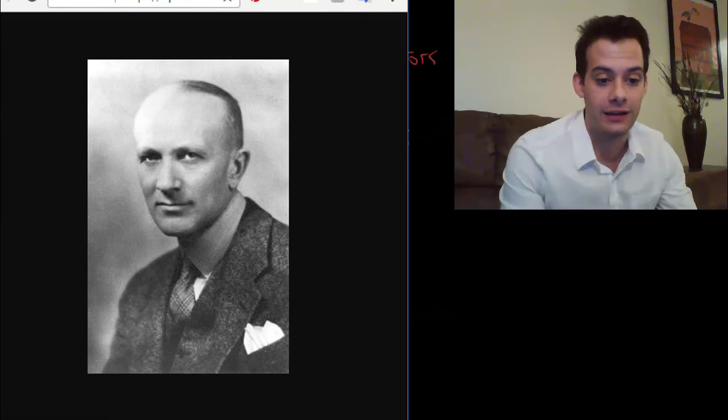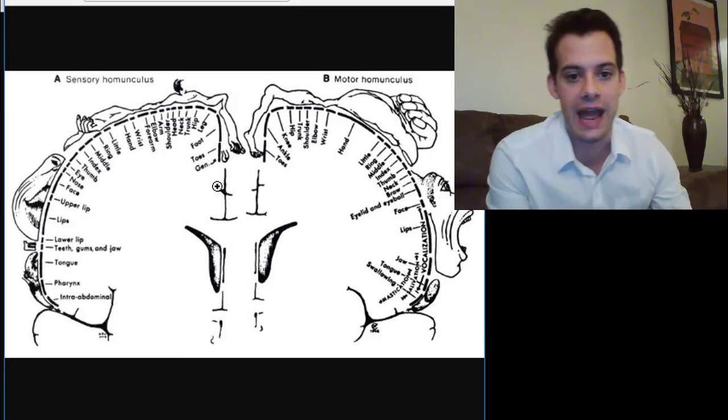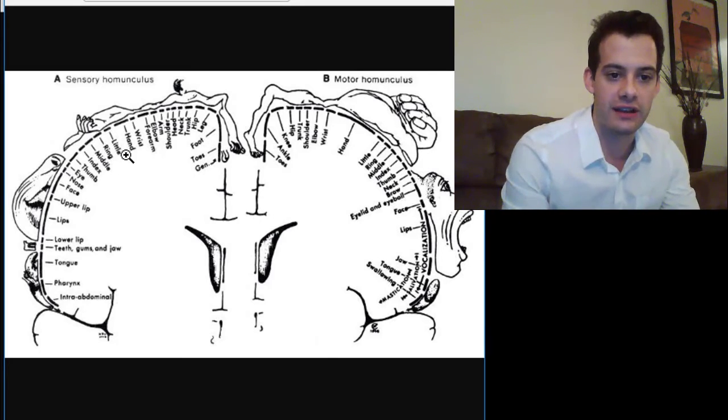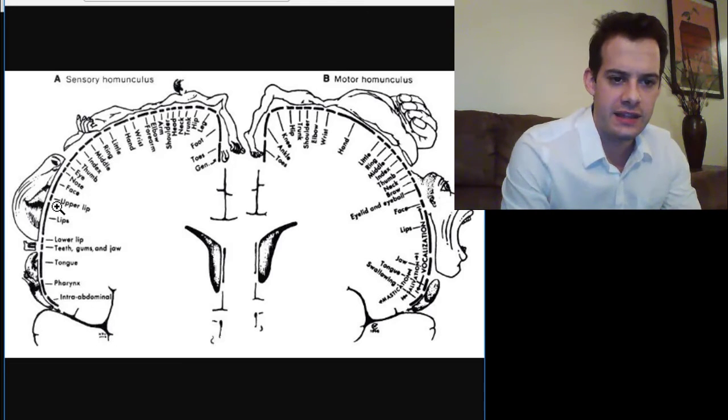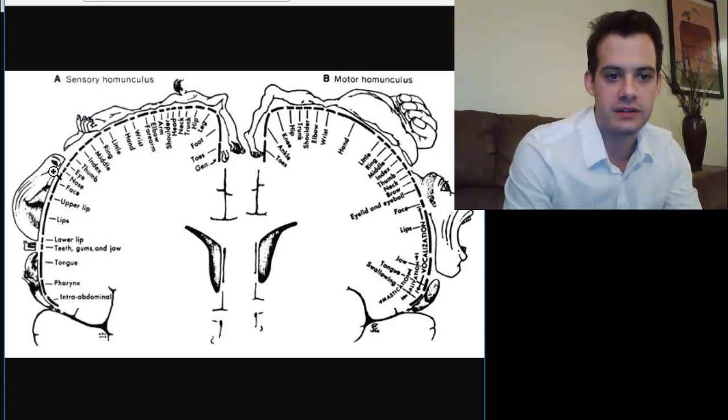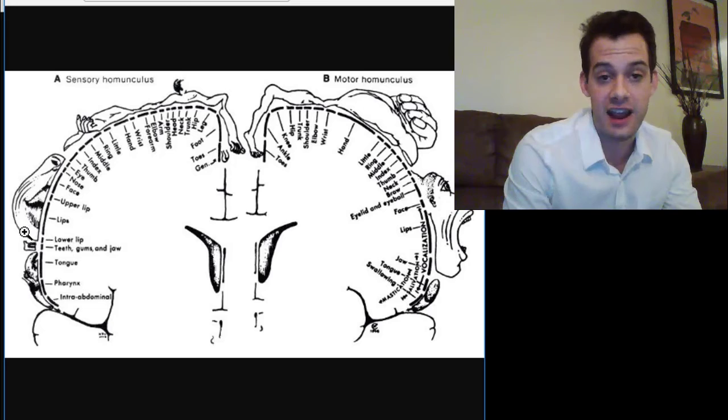Homunculus is Latin for little man. So if we look at the somatosensory cortex which is here, this is a sensory homunculus. We can see that it shows the different parts of our body mapped out onto the surface of the cortex here. And you can see that some areas take up a lot of space.